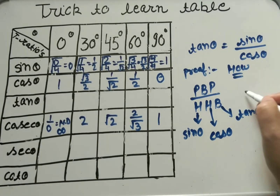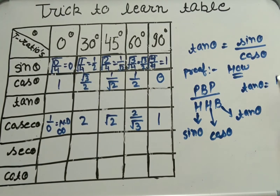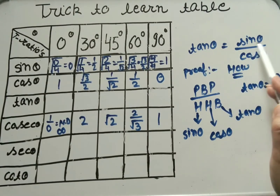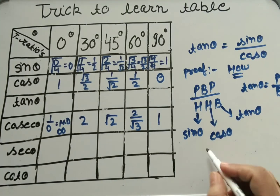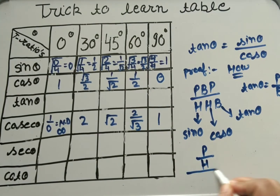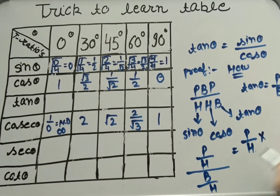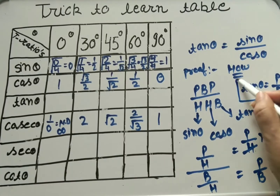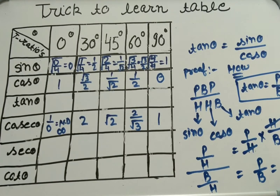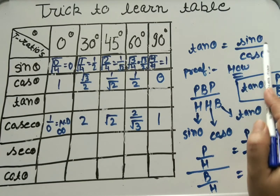Tan theta equals sin theta divided by cos theta. Proof: tan theta = P/B. Sin theta = P/H divided by cos theta = B/H. Taking the reciprocal of B/H gives H/B. So P/H × H/B = P/B, which is tan theta. Therefore tan theta = sin theta upon cos theta.